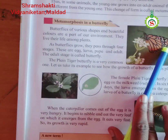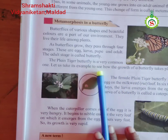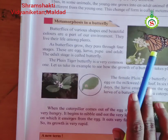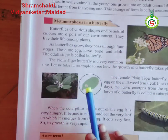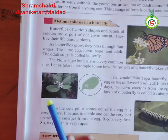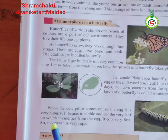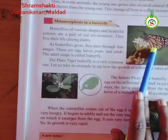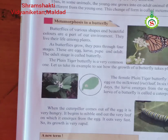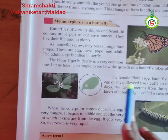The plain tiger butterfly is most commonly seen in India. Let us take its example to see the life cycle of a butterfly. A female butterfly lays eggs. This female plain tiger butterfly lays its eggs on the leaves of a specific plant. Every species of butterfly lays its eggs on specific leaves. The plain tiger butterfly lays its eggs on the milkweed or rue plant.